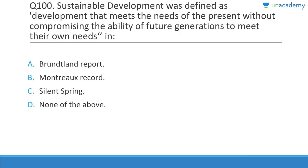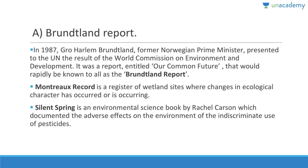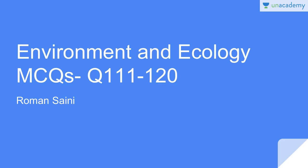Question 100: Sustainable development was defined as 'development that meets the needs of the present without compromising the ability of future generations to meet their own needs' in the Brundtland Report of 1987. It was developed by former Norwegian Prime Minister Brundtland, titled 'Our Common Future,' and resulted from the World Commission on Environment and Development.